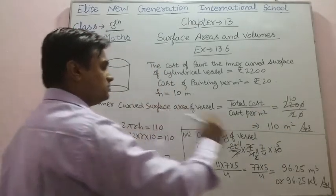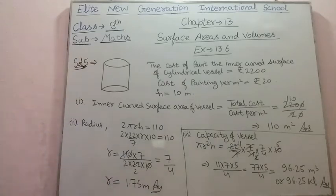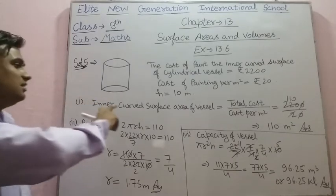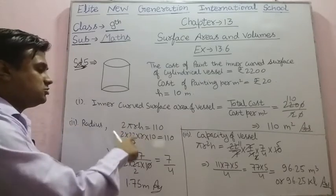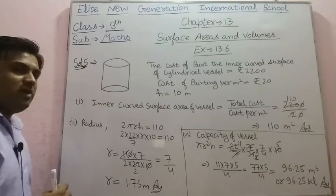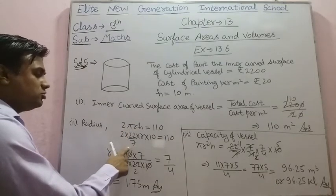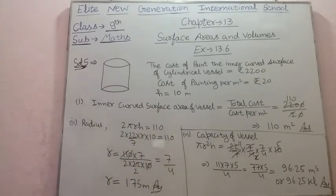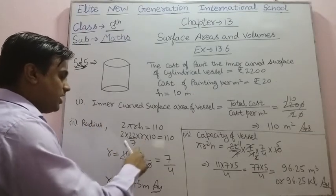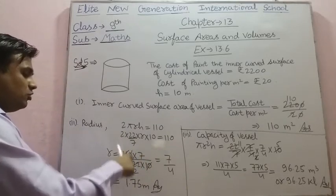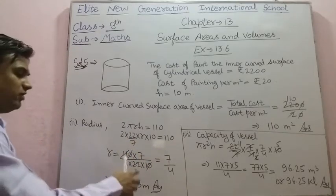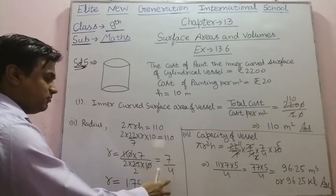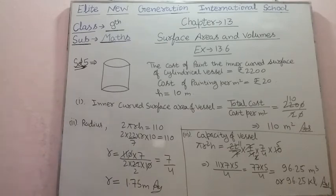The curved surface area is 110 meter square. Now in the second part, to find the radius: the inner curved surface area is 2πrh, so 2 × (22/7) × r × 10 = 110. By cross multiplication, r = (110 × 7) / (2 × 22 × 10) = 7/4. Dividing 7 by 4 gives r = 1.75 meter. So the radius is 1.75 meter.